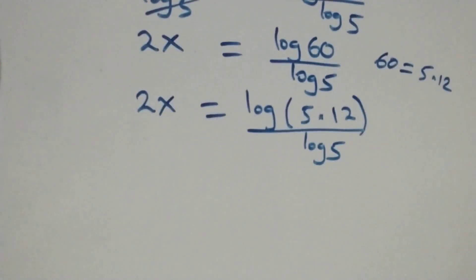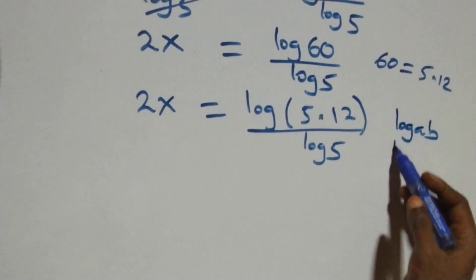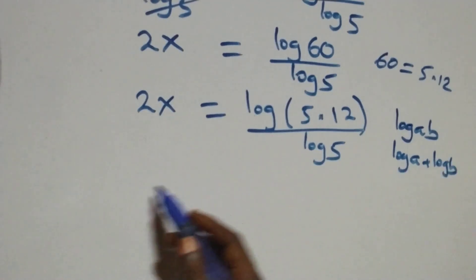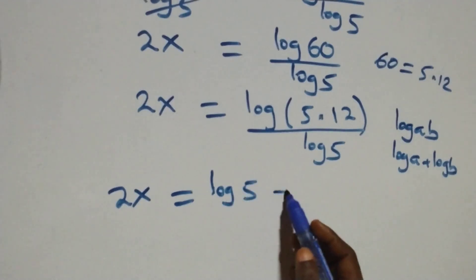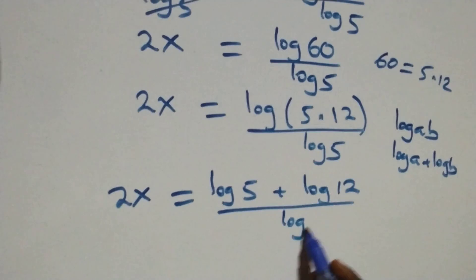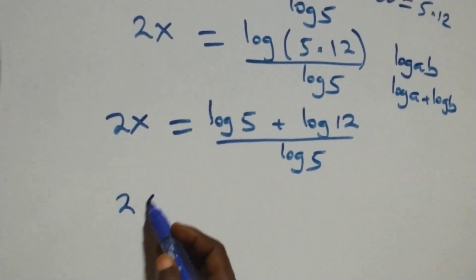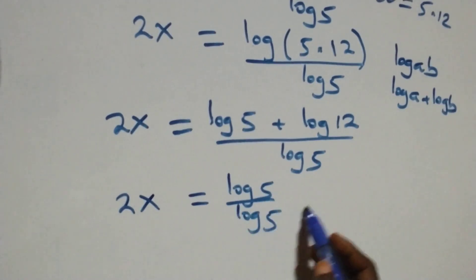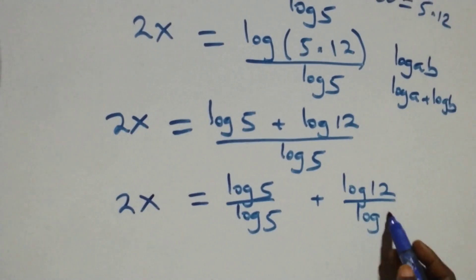Using the product rule of logarithms, log of five times twelve expands to log five plus log twelve. So two x equals log five plus log twelve, all over log five. We separate this into two fractions: two x equals log five over log five, plus log twelve over log five.